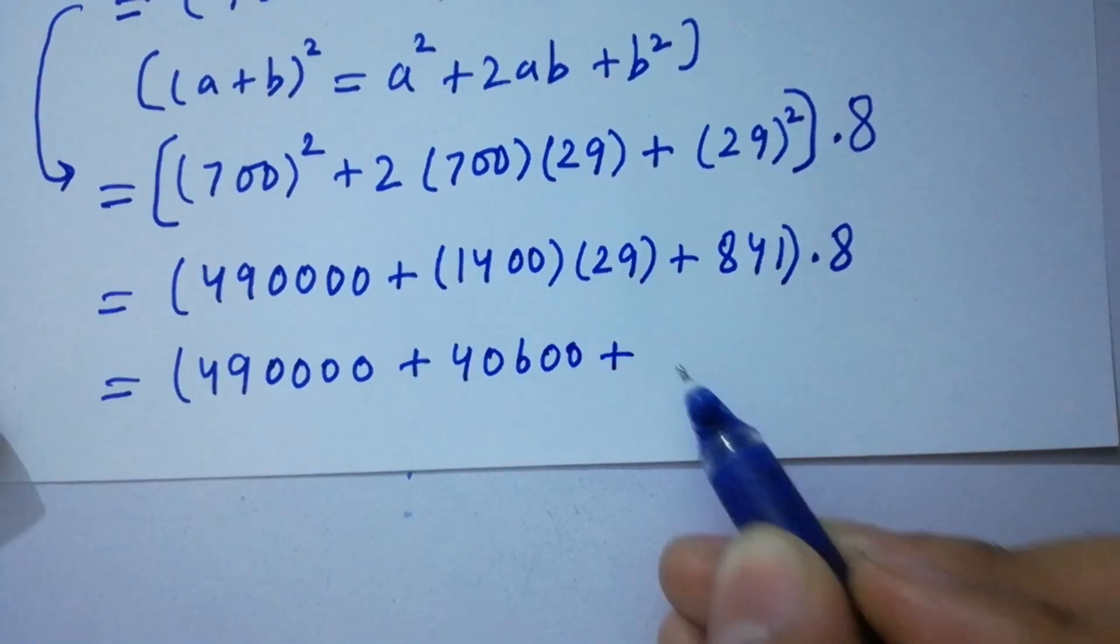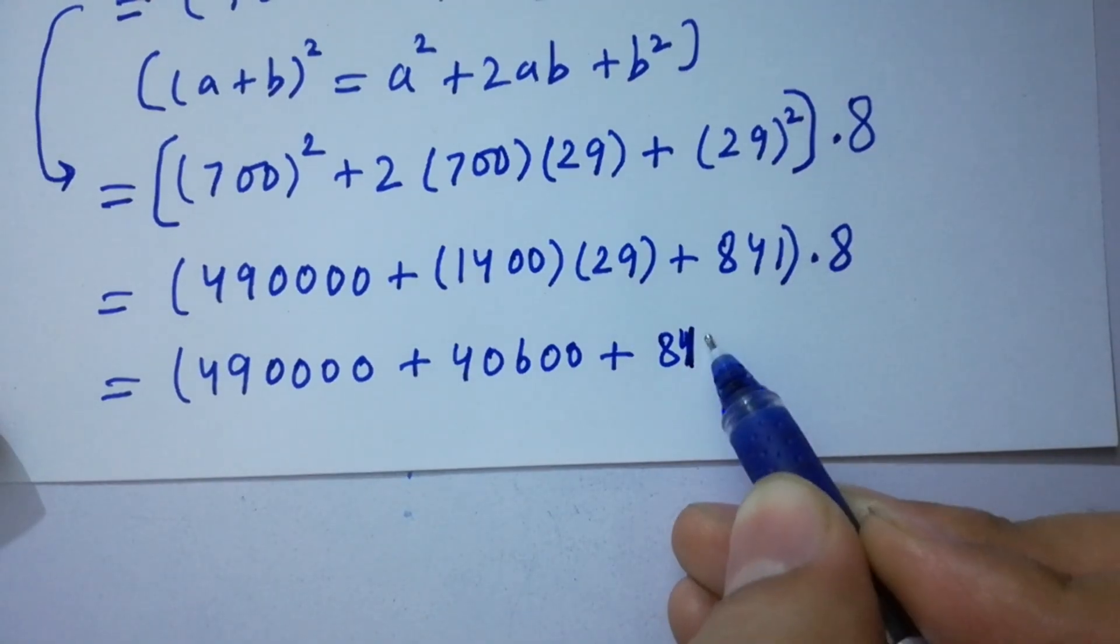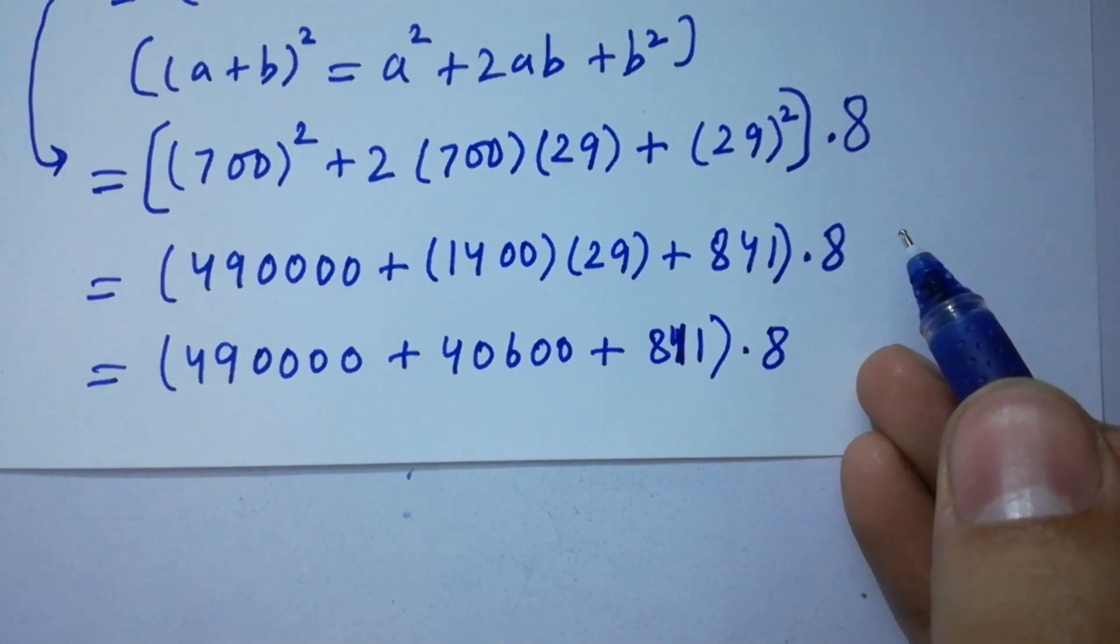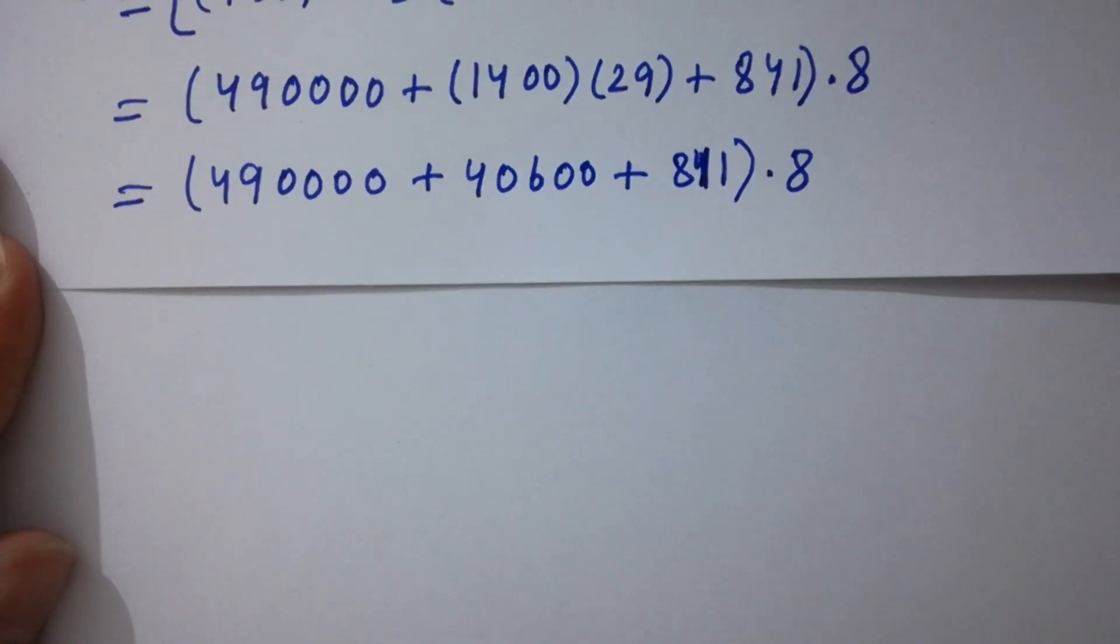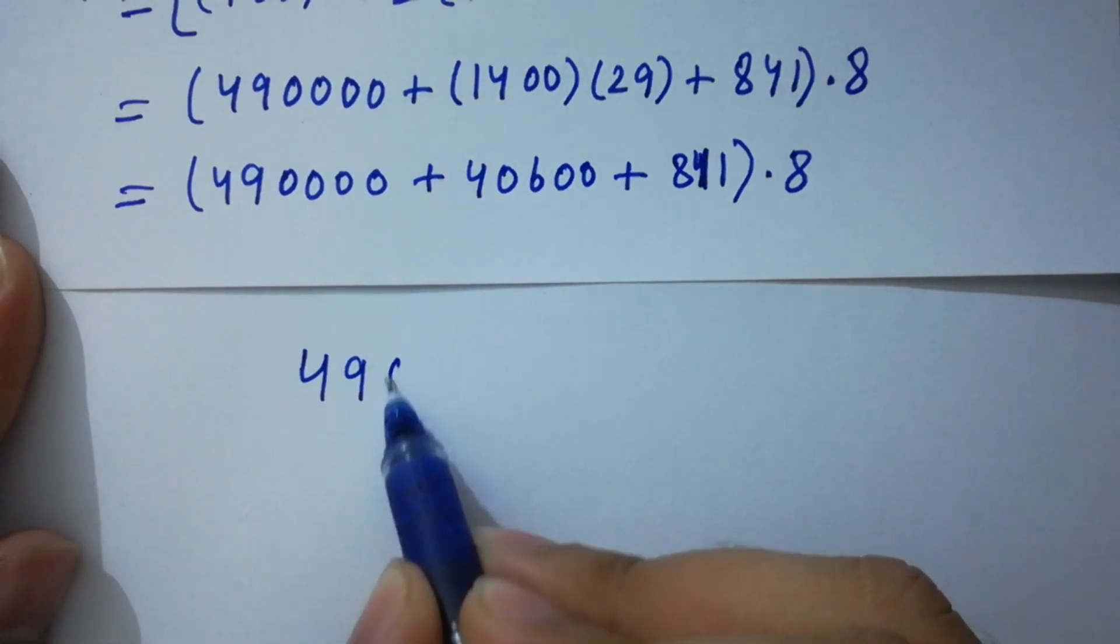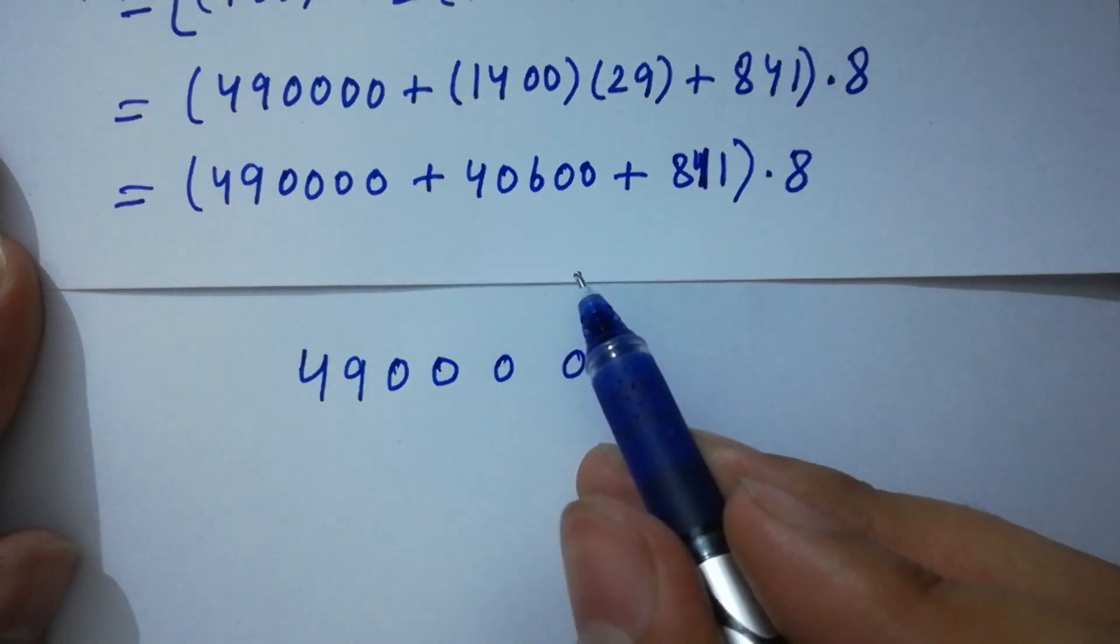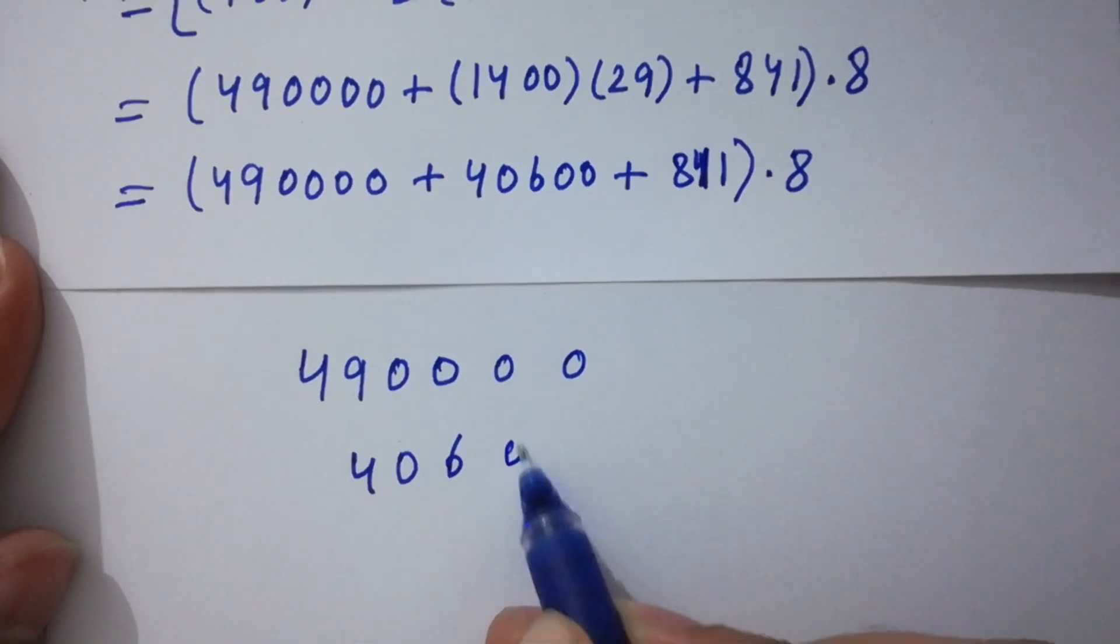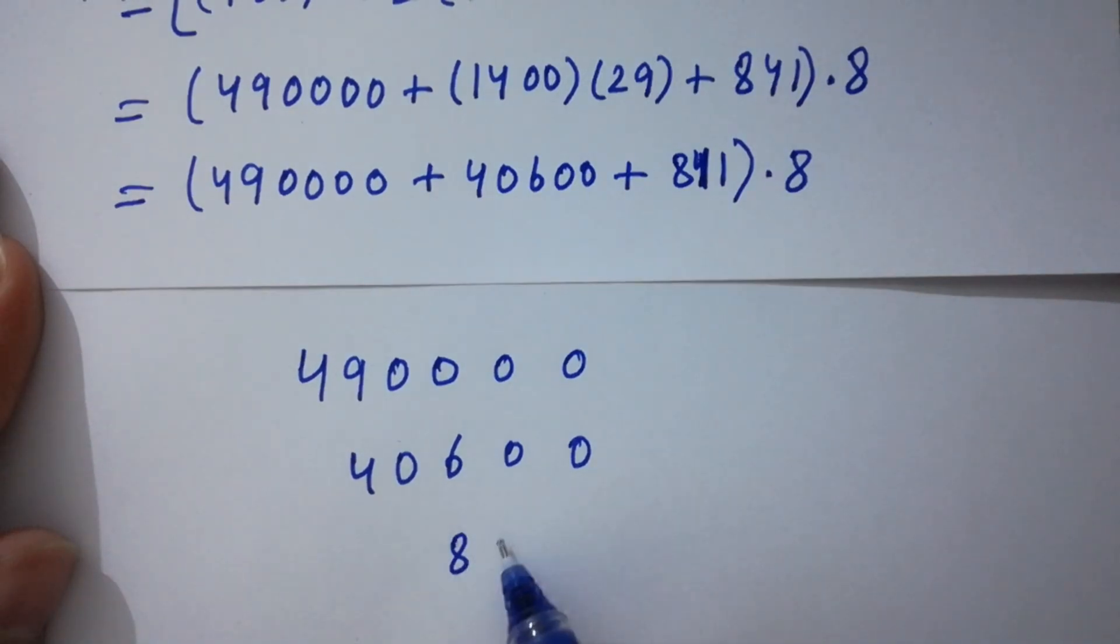I am going to add them. We can write it as 490,000, then 40,600, and 841.